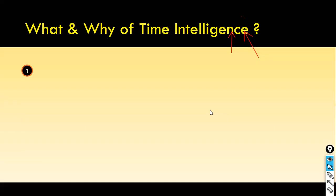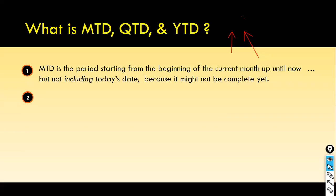First, let's understand what month-to-date means. Suppose today is September 7th and your manager asks for the month-to-date sales. That means starting from the beginning of this month up until now, but excluding today's date because today is not yet over. So September 1st through yesterday evening — that is your month-to-date. Month-to-date is the period starting from the beginning of the current month up until now, but not including today's date.